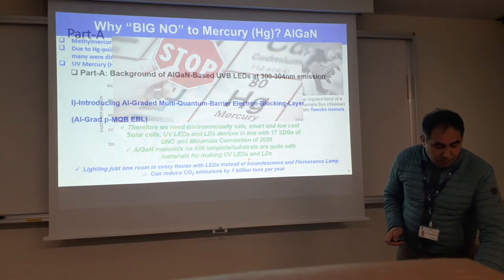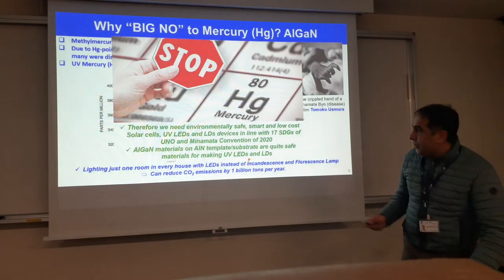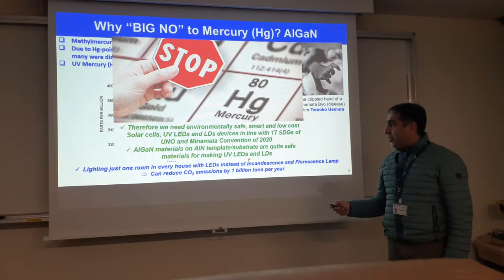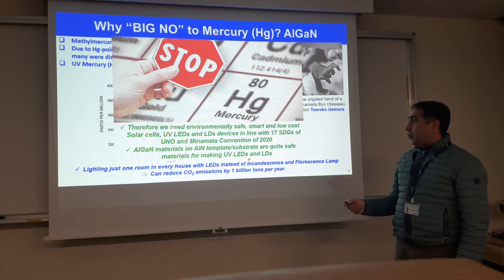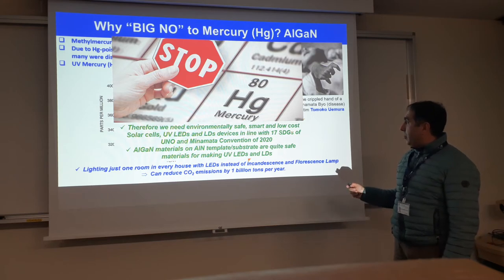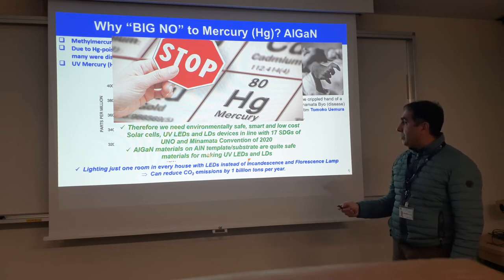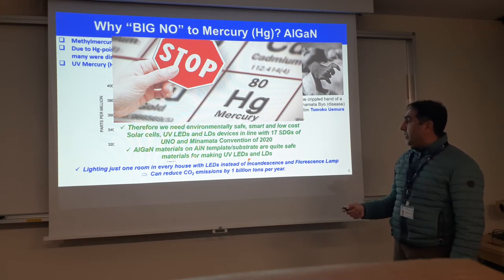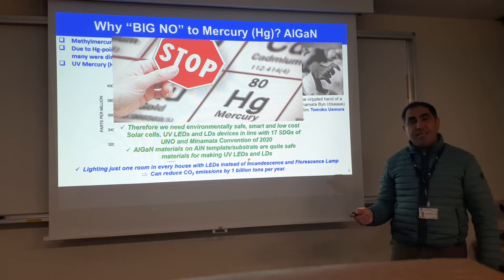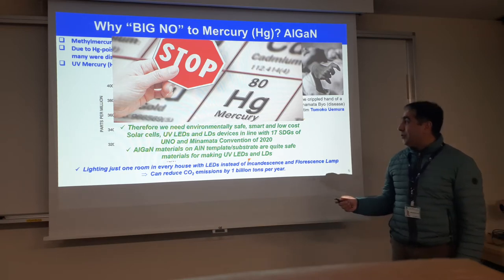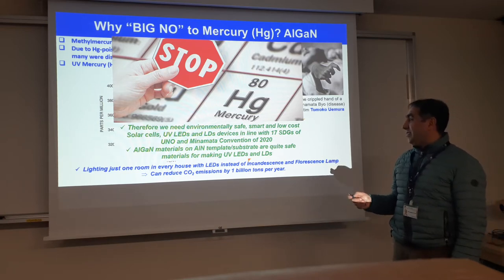Based on those motivations, we have a good choice. We need environmentally safe, smart, low-cost UV LEDs and laser diodes, in line with the 17 sustainable goals of the United Nations and also the Minamata Convention of 2020. AlGaN materials on the aluminium nitride template is one of the good solutions to face these challenges.